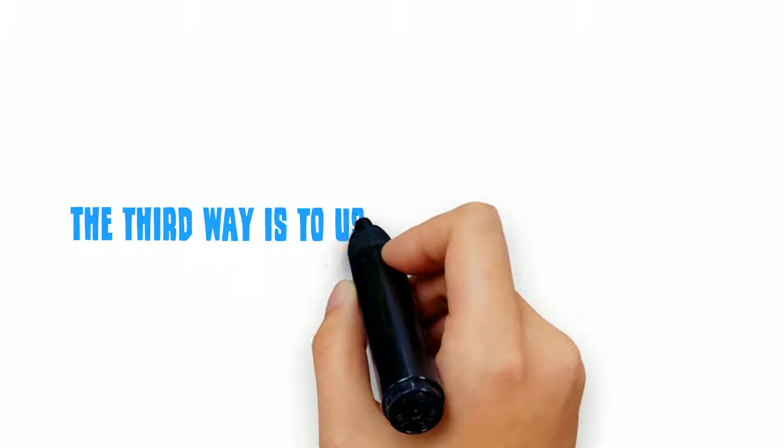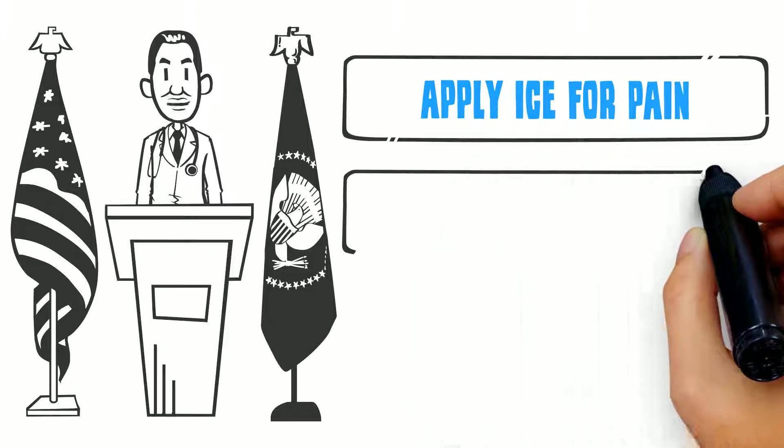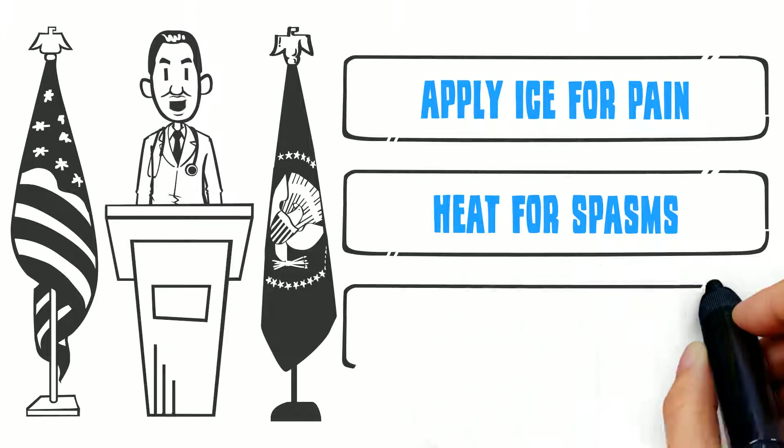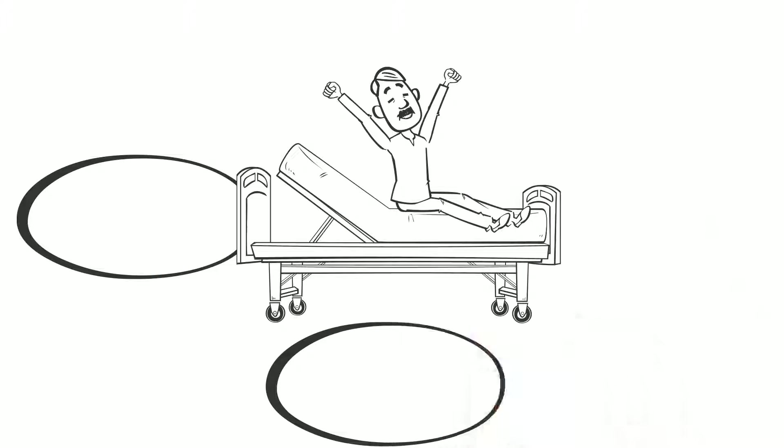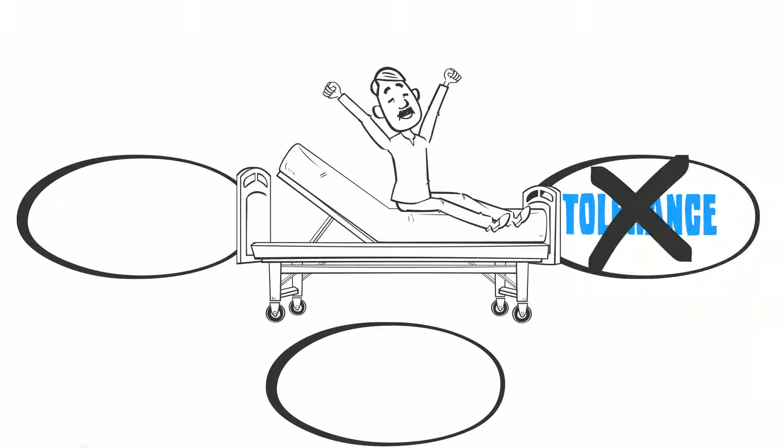The third way is to use other forms of pain relief. You can apply ice for pain, heat for spasms, and use anti-inflammatory medications. All of these will reduce pain without risking tolerance, dependence, and withdrawal.